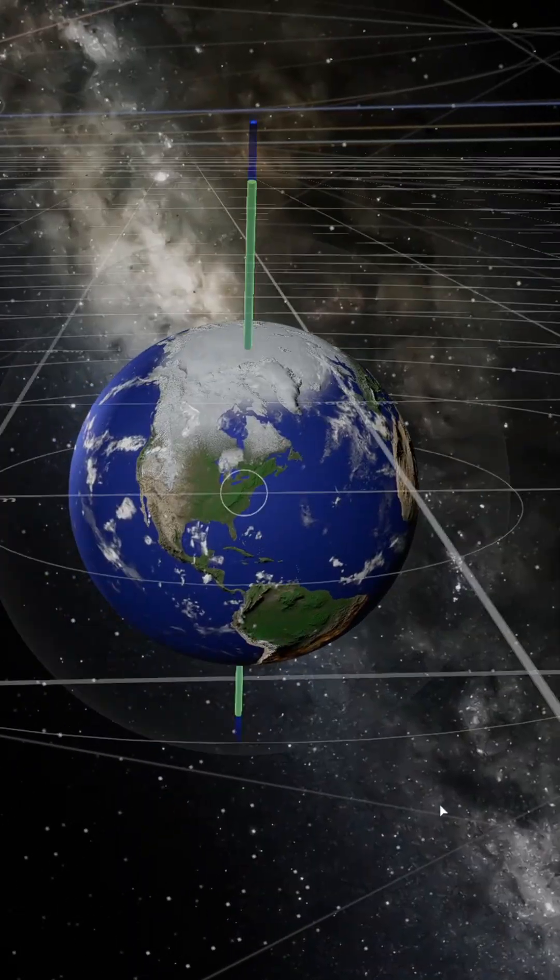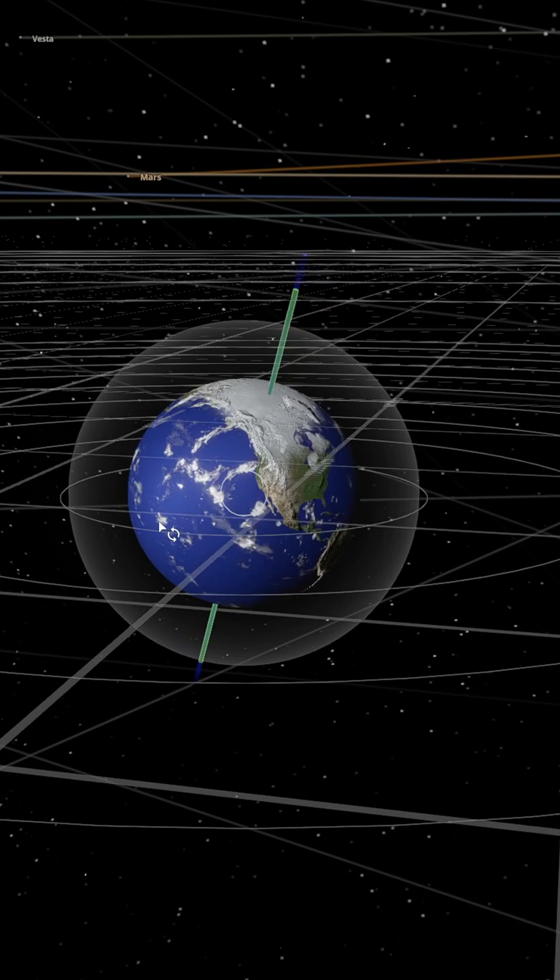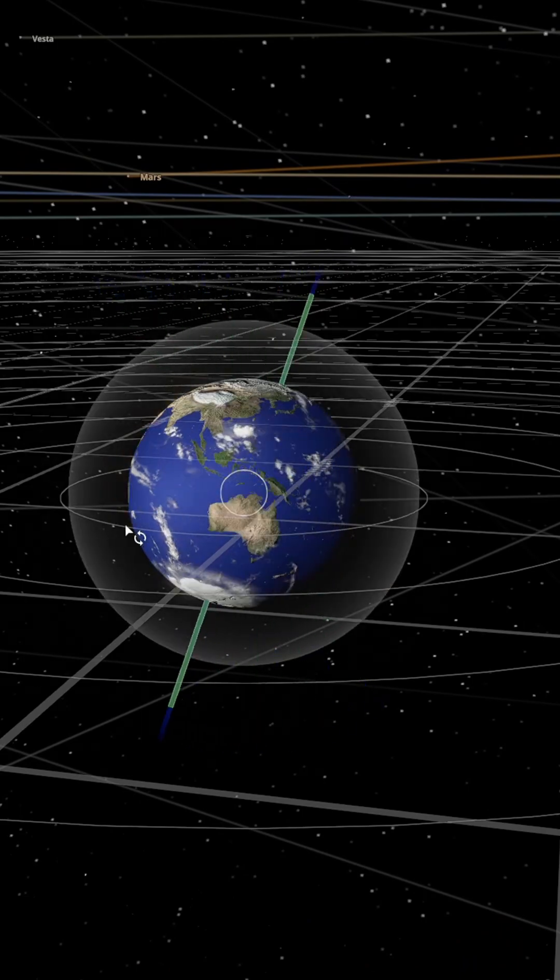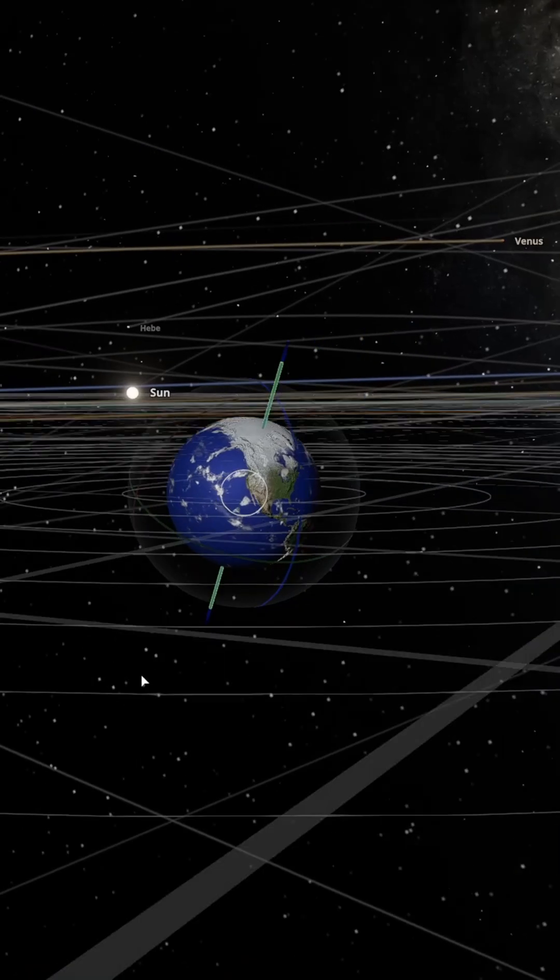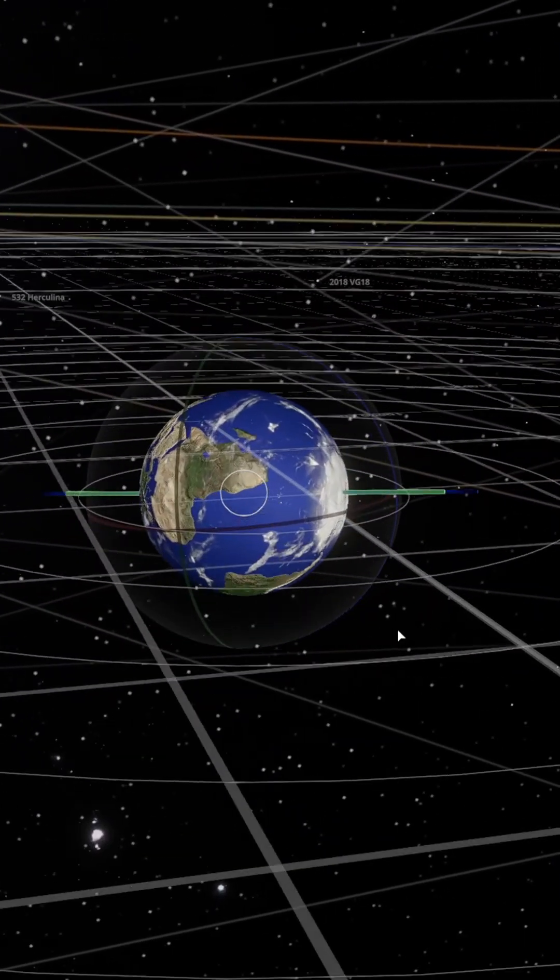At present, Earth's axial tilt is 23.4 degrees. If we increase it by 90 degrees, the tilt becomes 113.4 degrees. Antarctica and the North Pole are moved to the equator, while the original equator becomes the poles.